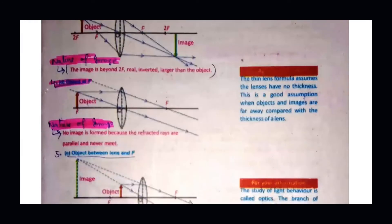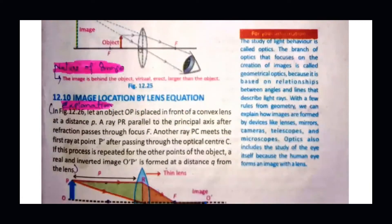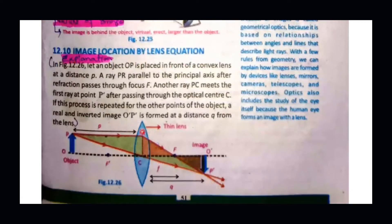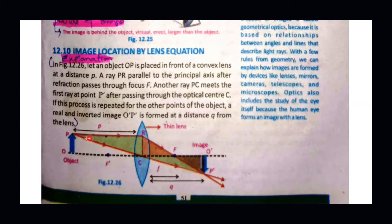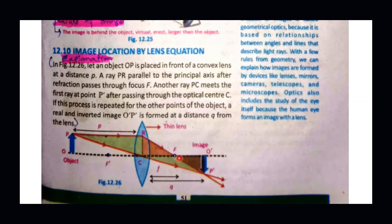Let us explain image location by lens equation. This is a simple figure we discussed earlier — a convex lens with an object named OP. The image of this object is made on the right side, named O'P'. We need to keep sign conventions in mind. The lens has a right side and a left side. We have object distance, image distance, focal length, real image, and virtual image, for which we will assign appropriate signs.